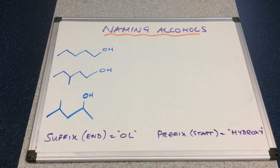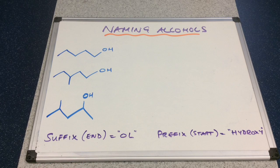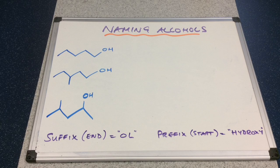In this third naming video I'm going to look at how to name alcohols. I've drawn up in blue three alcohols for you to have a go at naming. This is the first naming video where I'll introduce the terms suffix, which is the end part of the name — the suffix for alcohols is -ol — and prefix, which is the start of the name. For alcohols, the prefix is hydroxy.